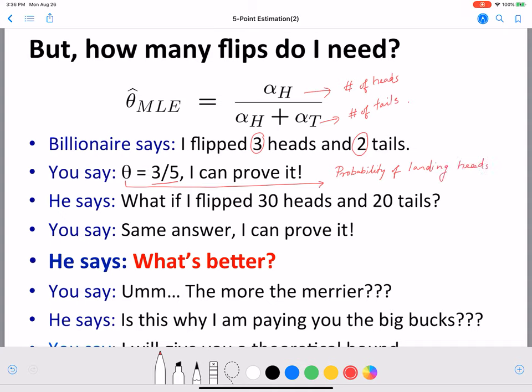Now let's look at a bigger data set where we flip the coin 50 times and suppose we get 30 heads and 20 tails. Again our theta value would still be 3 by 5 because it's 30 over 50.